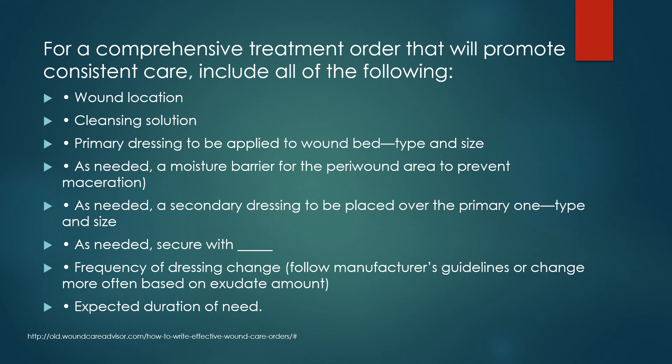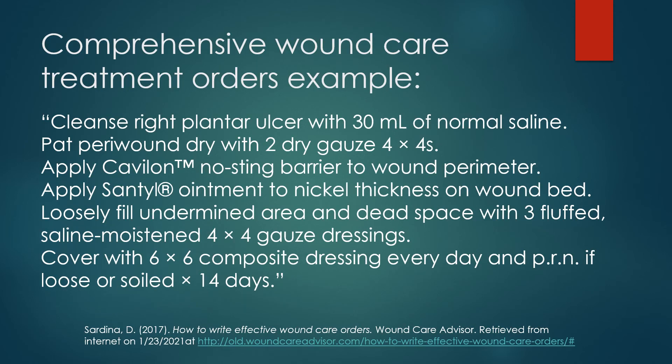Also include the expected duration of the need for these dressings. A comprehensive wound care treatment order example: Cleanse right plantar ulcer with 30 mL of normal saline. Pat the peri-wound dry with two dry gauze 4x4s. Apply Cavilon no-sting barrier to wound perimeter. Apply Santyl ointment to nickel thickness on wound bed. Loosely fill undermined area and dead space with three fluffed saline-moistened 4x4 gauze dressings. Cover with 6x6 composite dressing every day and PRN if loose or soiled for 14 days. This was written by Donna Sardina and is visible on the woundcareadvisor.com website.